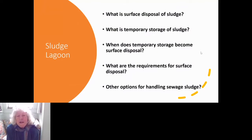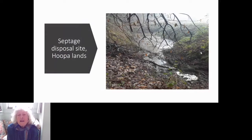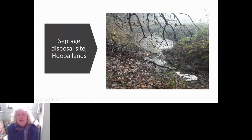Here's an example of a disposal site that needs quite a bit of correcting. This is septage that's been placed on lands by the Hoopa Tribe's contractor, and they essentially have what's a cesspool at this point. It's not a proper septage disposal site, so we're working with them to try to get this corrected and get the funding so it can be converted into a real surface disposal site.